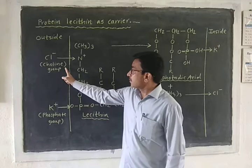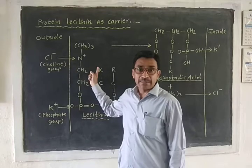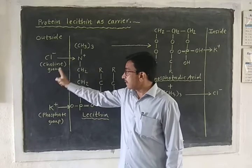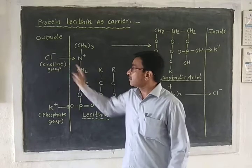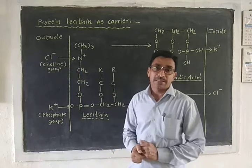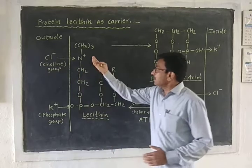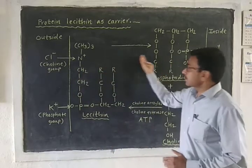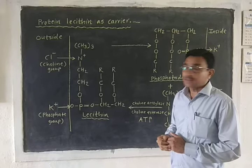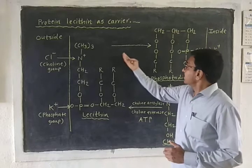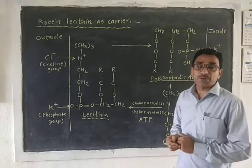While the choline group of the lecithin acts as a binding site for anions. When this lecithin comes to the inner surface of the cell...